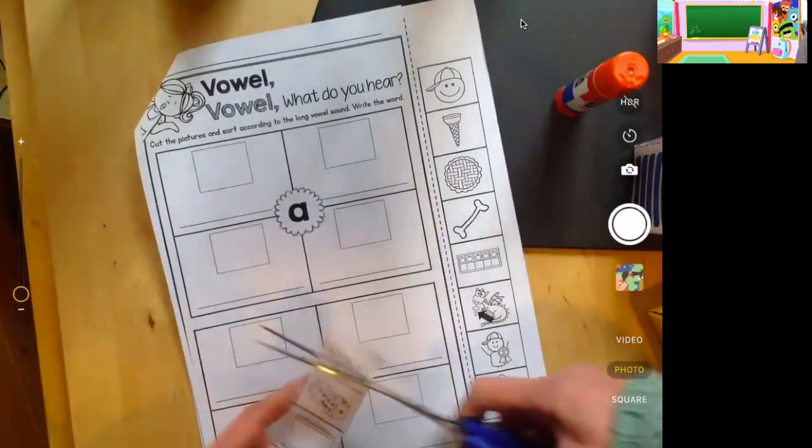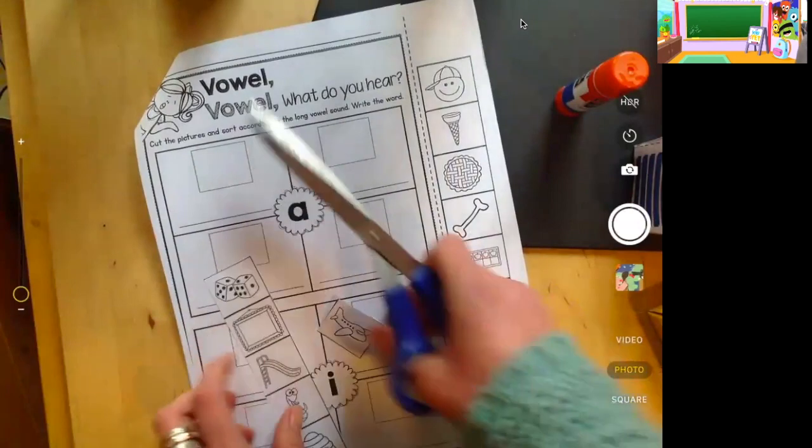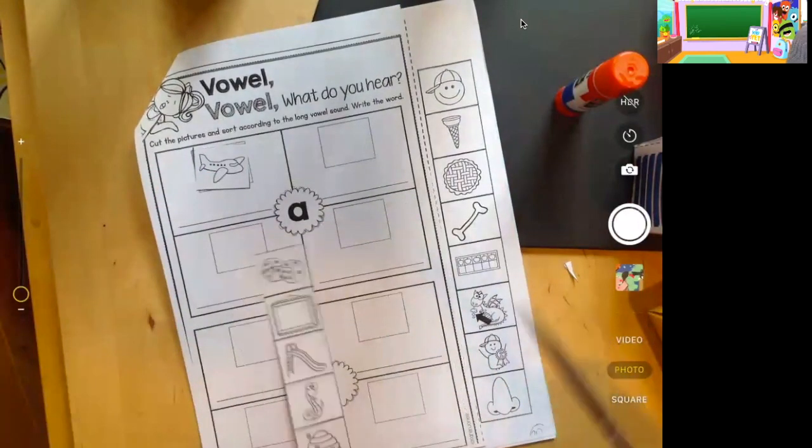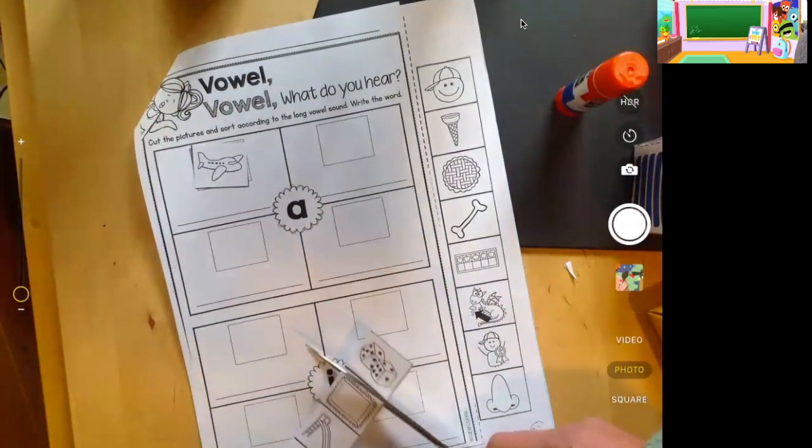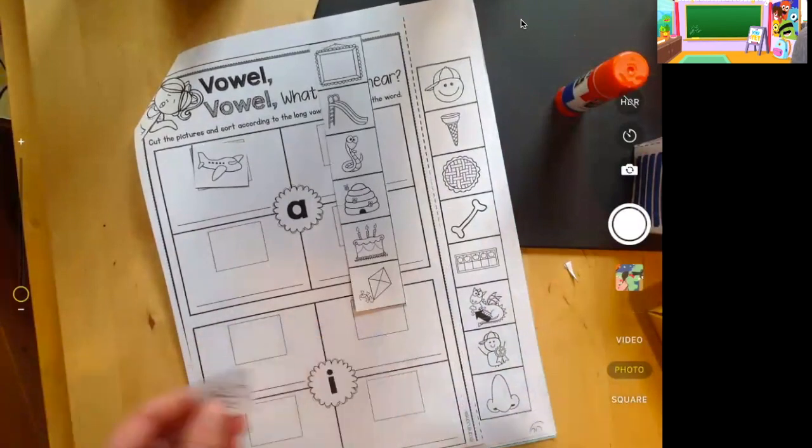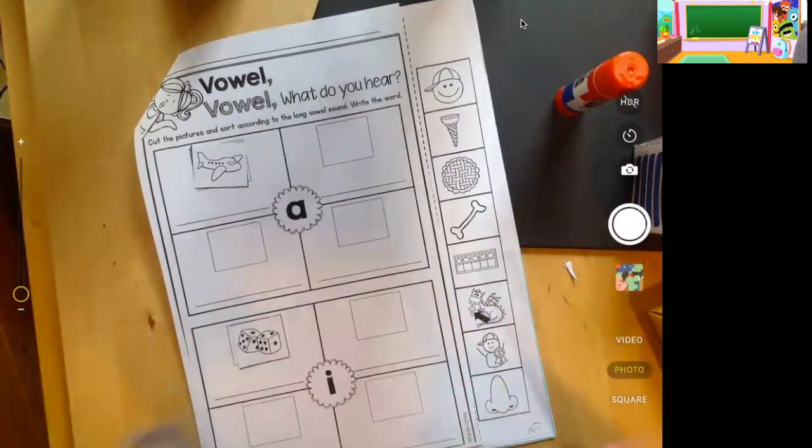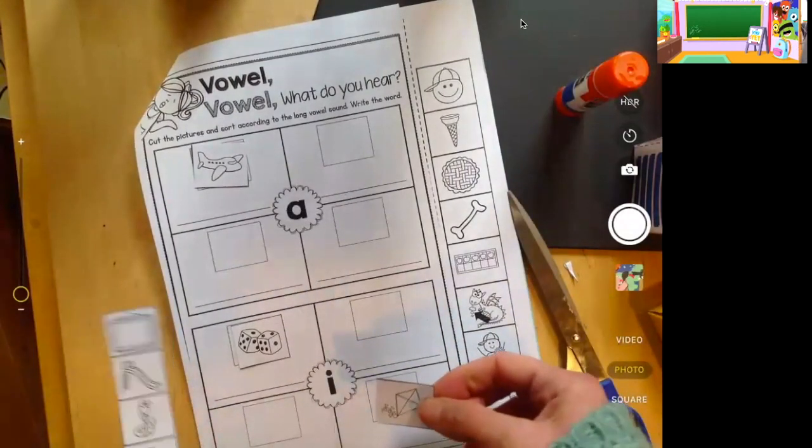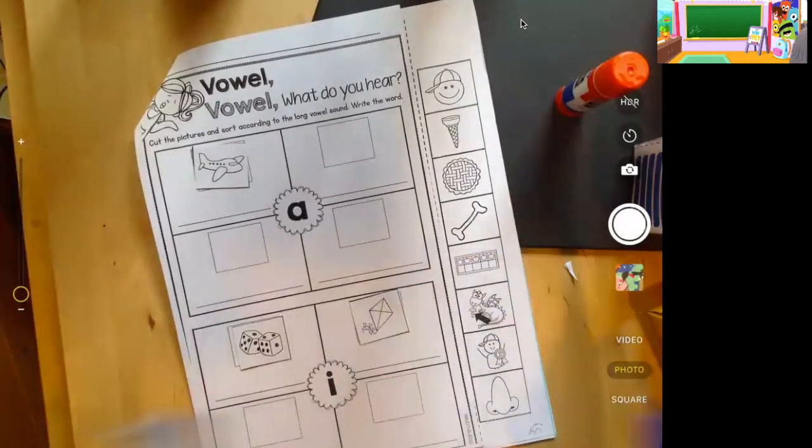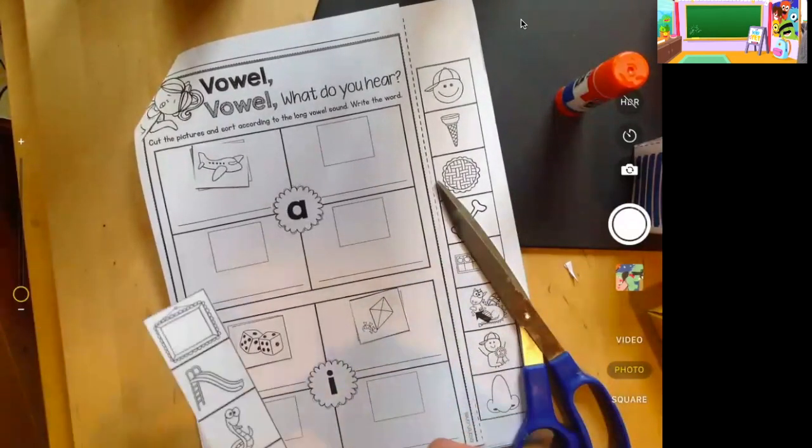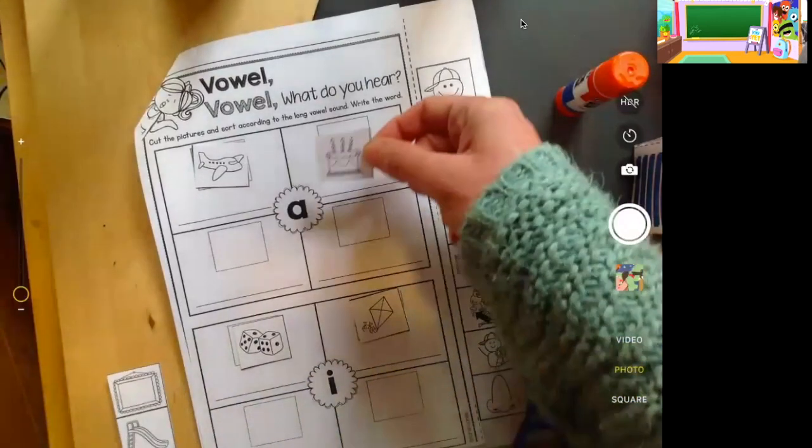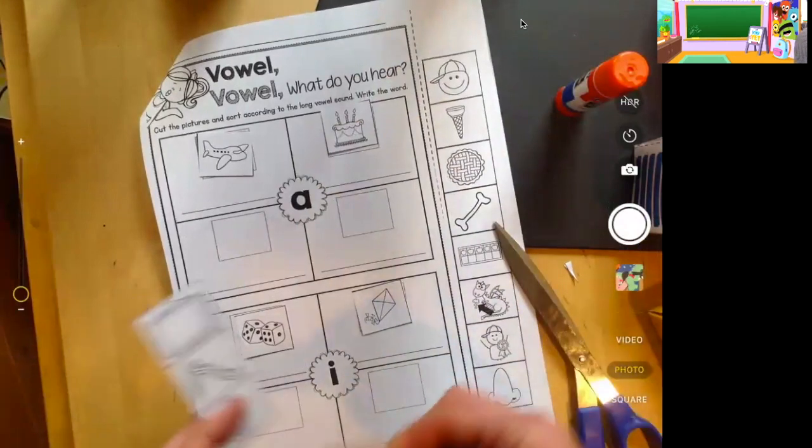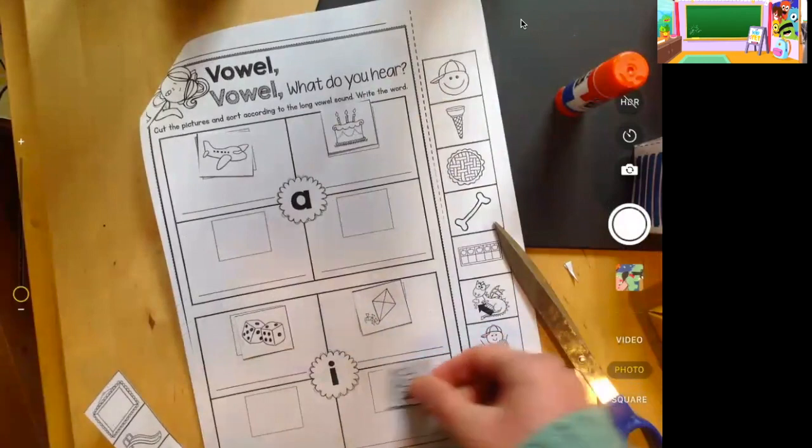So I have the word plane. So I'm going to think plane. Oh, definitely a long A. And then I have dice. D-I-I-S-I. And then I have kite, k-i-t-I. And then I have cake, k-a-ke, cake.